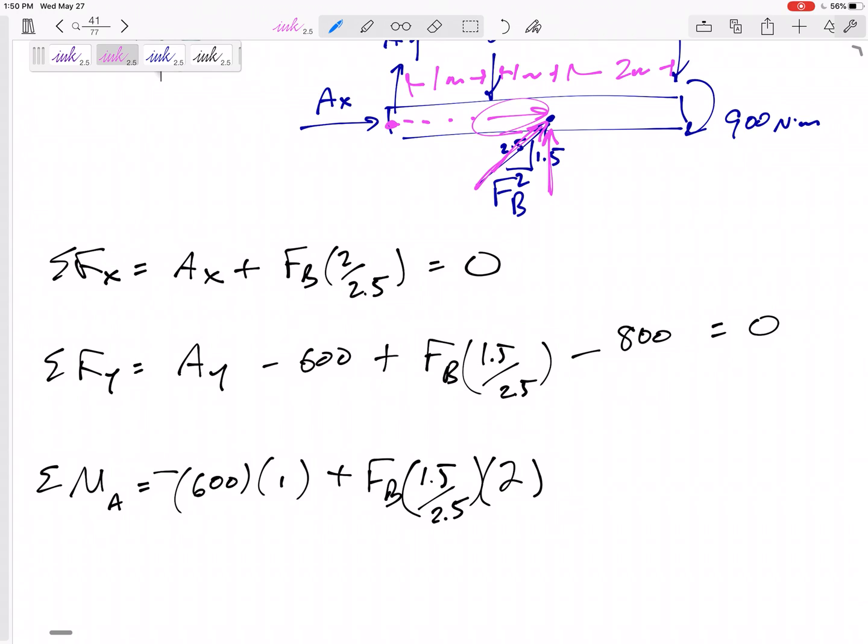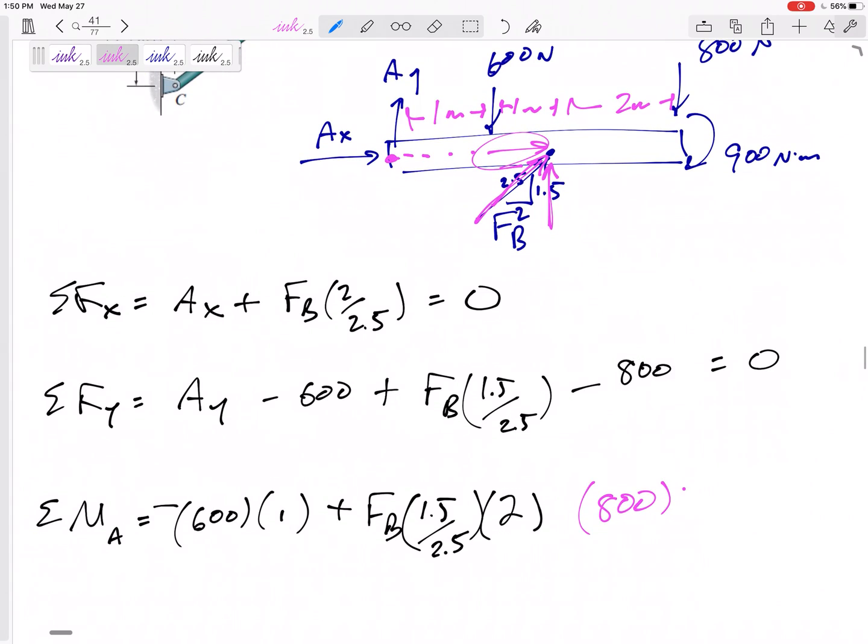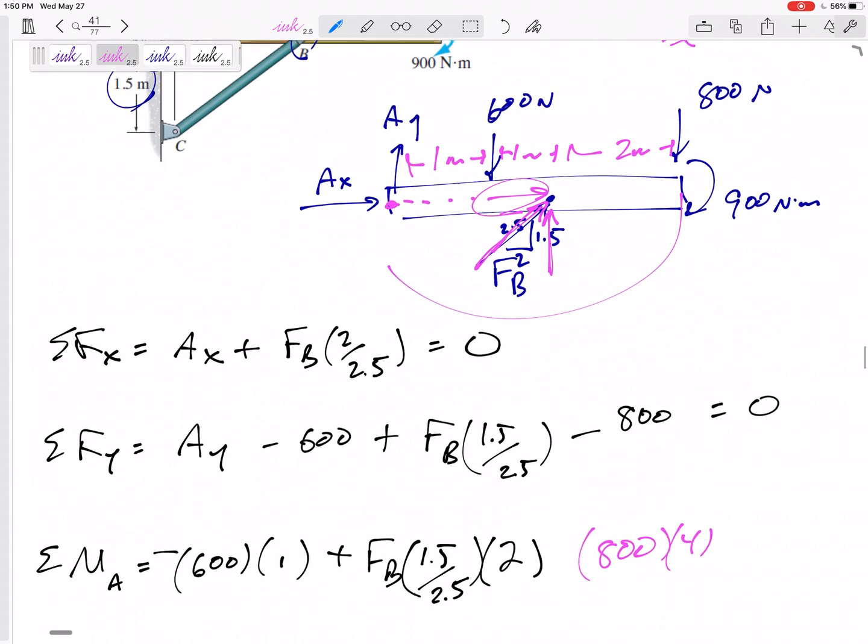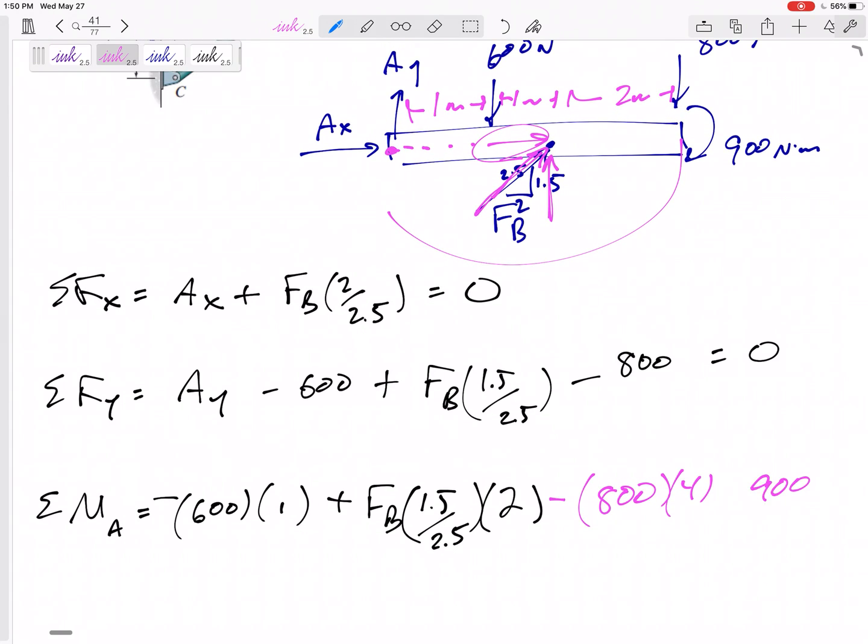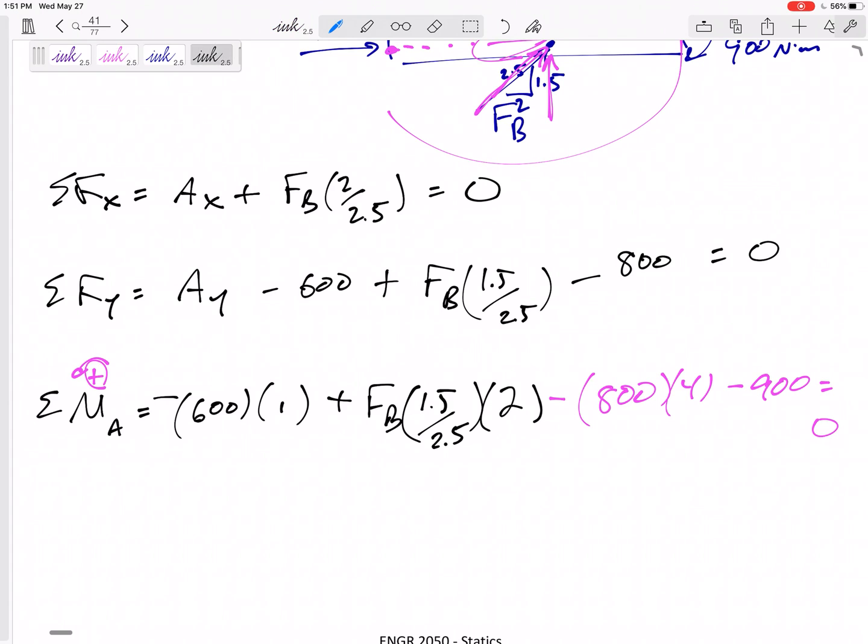All right, the 800 is acting 4 away, creating a negative moment. And then I've got that 900. It is clockwise, so it is negative. I've been defining everything as positive counterclockwise. Notice I don't say 900 times 4 meters. That 900 is a moment to itself. It's a free moment. It doesn't matter that it's 4 meters away. It's just a clockwise 900 Newton-meter moment.